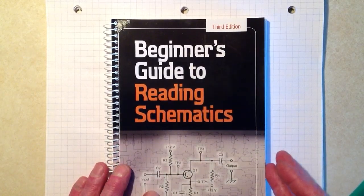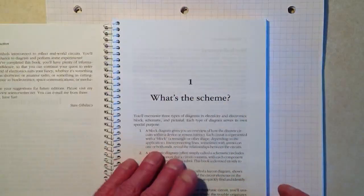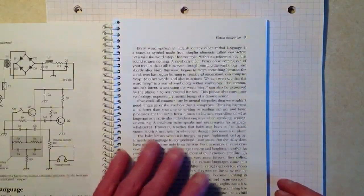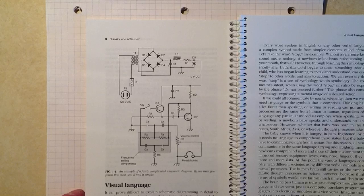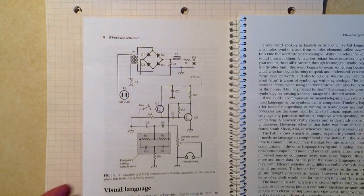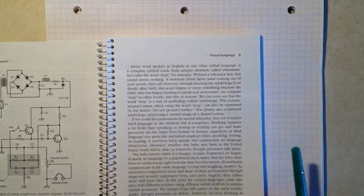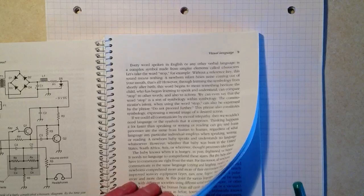The improvements in this edition include completely redrawn artwork all throughout. For example, there you go, figure 1-1. I redrew all of the art in this book, edited the text, and added some new stuff in the back.